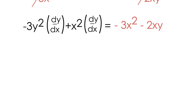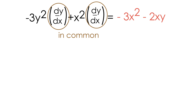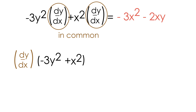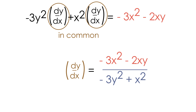Our next step is to factor out dy/dx. Both terms on the left hand side have a dy/dx in common, so factoring gives dy/dx times the quantity negative 3y squared plus x squared. To get dy/dx by itself, we divide both sides by negative 3y squared plus x squared, which cancels on the left. So dy/dx equals negative 3x squared minus 2xy, all divided by negative 3y squared plus x squared. That is the solution.